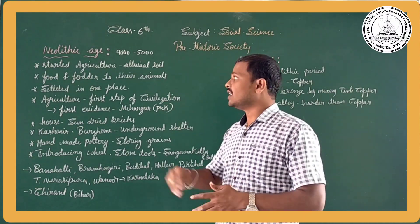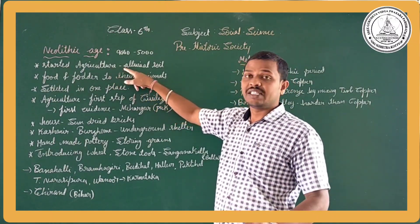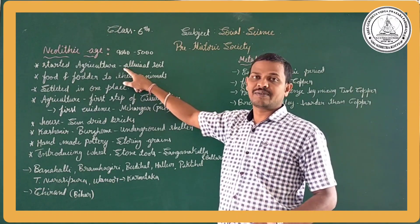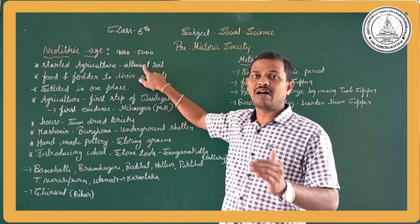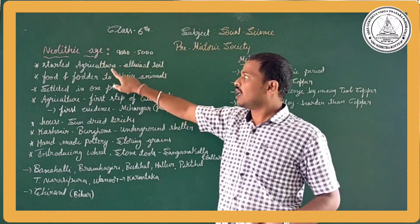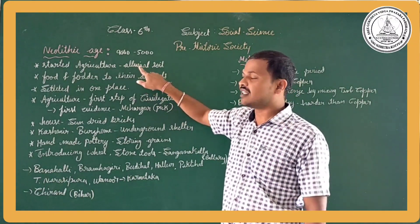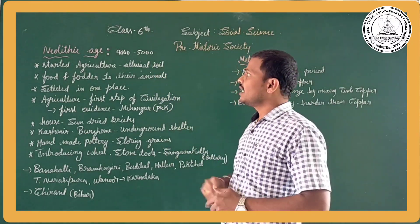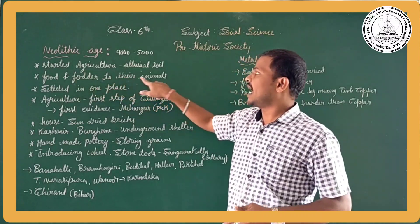The Neolithic age people started agriculture and they settled near river banks. At river banks we get alluvial soil, which is very useful for agriculture. So almost all of the Neolithic age people started agriculture in places with alluvial soil. This way they got food and fodder for their animals.